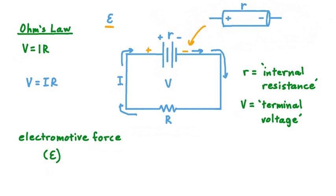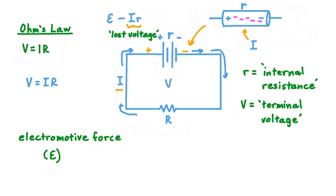Recall that when a battery is connected in a circuit and charge is flowing, the same current I that travels through the rest of the circuit also travels across the battery. Since the battery has some non-zero internal resistance, I times that internal resistance represents a voltage loss. We take our electromotive force epsilon and subtract from it I times lowercase r, the battery's internal resistance. This quantity — current multiplied by internal resistance — is called lost voltage. So: epsilon minus I·r equals V, the potential difference experienced by the rest of the circuit.